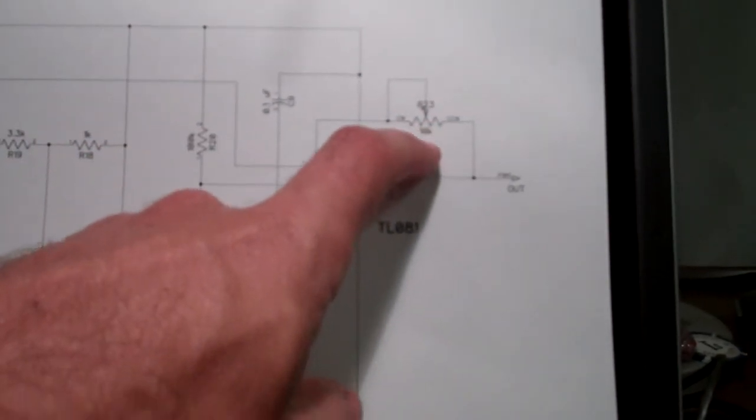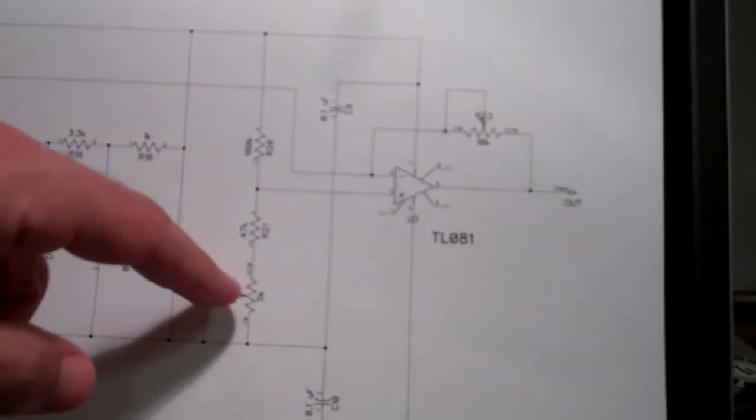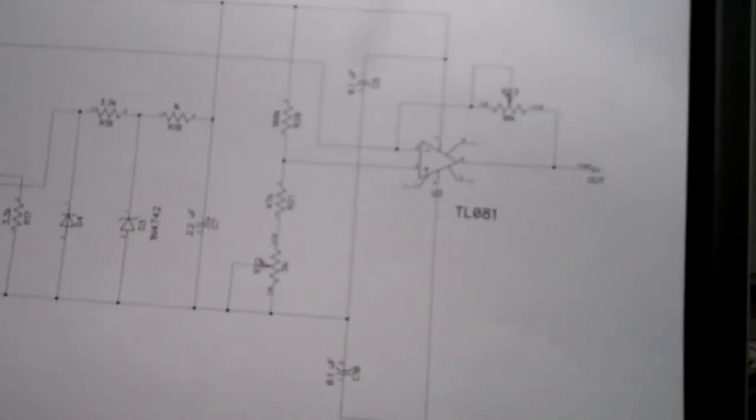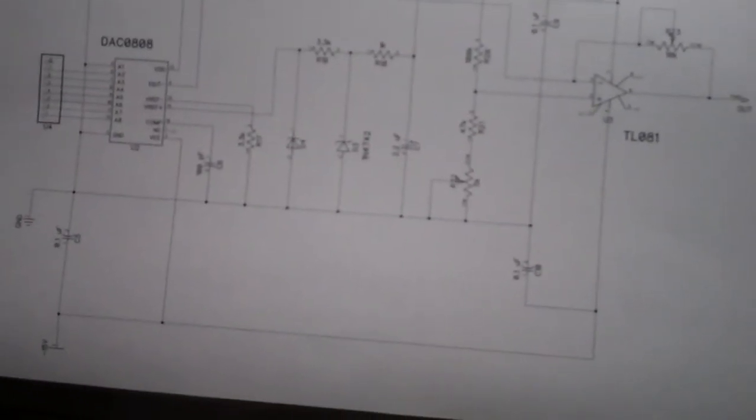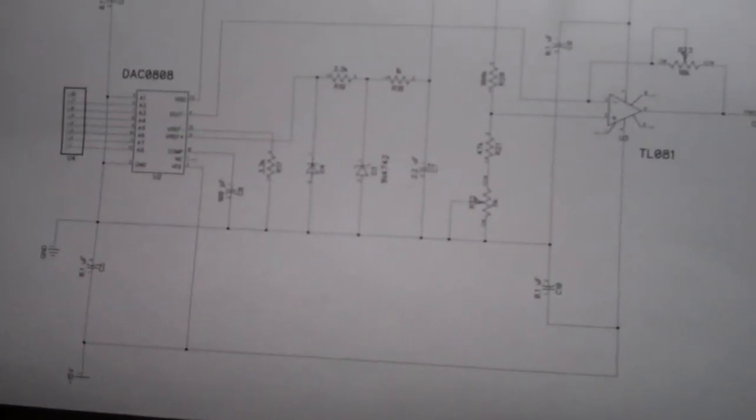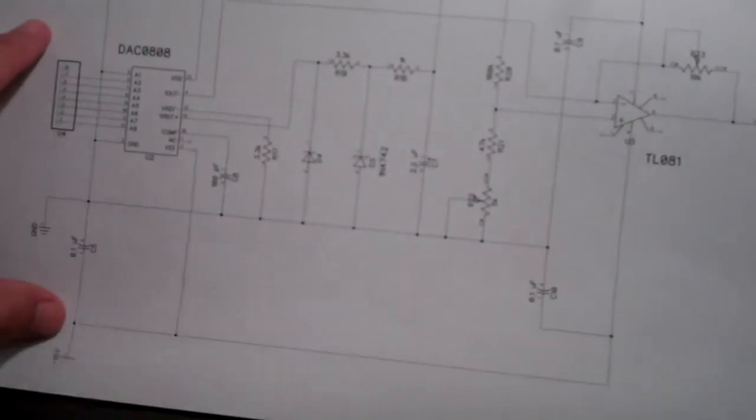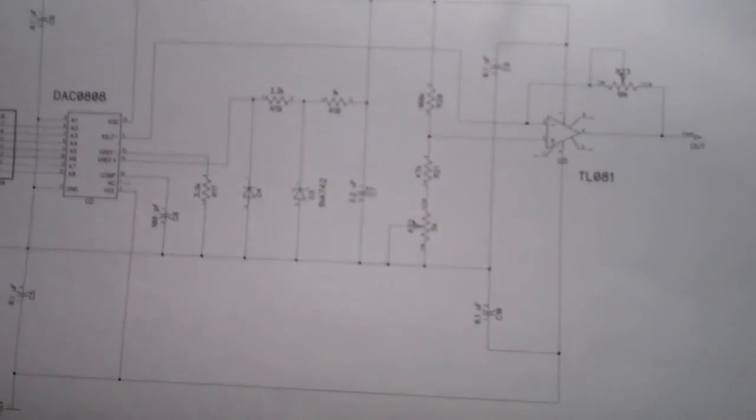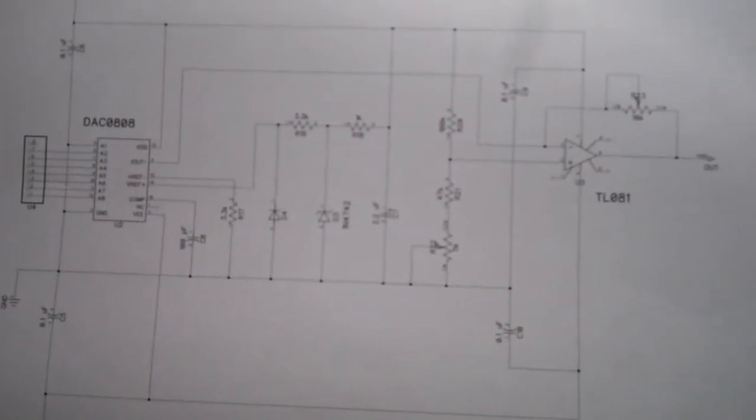So again, we're going to use this pot to scale the whole thing, our entire range. And then we'll use this pot to offset that exactly where we want it to be. So that's pretty much it. This is a great schematic to get started with. I think you could build this thing and using it as is, tweak it in whatever way you want. This is a great jumping off point to do whatever you ultimately want to do.